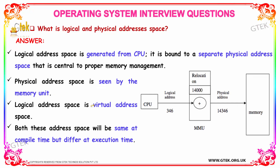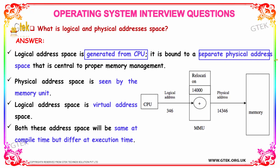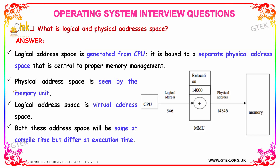What is logical and physical address space? Logical address space is generated from the CPU and it is bound to a separate physical address space, which is central to proper memory management. Physical address space is seen by the memory unit, whereas logical address space is a virtual address space. Both address spaces will be the same at compile time, but they will differ at execution time.